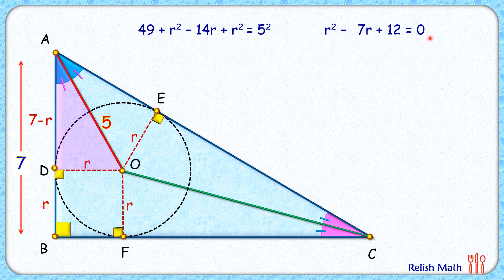But r can't be 4. Why? If you look carefully, the diameter of this circle has to be less than length AB, or 7 centimeters. Diameter is less than 7, that means radius has to be less than 3.5, so radius can't be 4 here.